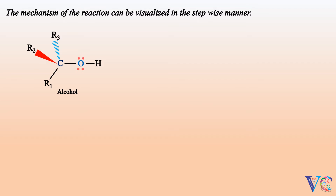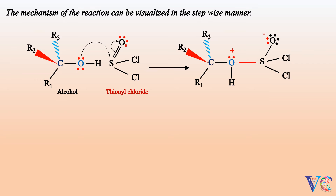Visualizing the mechanism stepwise: alcohol reacts with thionyl chloride. The first step in the mechanism is attack of one of the lone pairs of electrons of the oxygen atom of the alcohol onto the sulfur atom of thionyl chloride. In the next step, back polarization of one of the lone pairs of electrons on the oxygen atom of the thionyl chloride leads to the elimination of chloride ion.